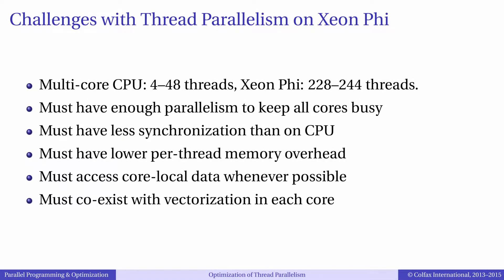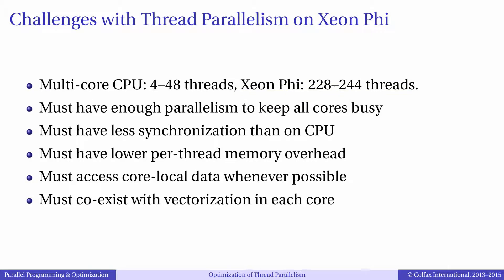Why is thread parallelism difficult, especially with Intel Xeon Phi processors? First, you have to have enough parallelism to keep all cores busy. On Intel Xeon processors your application must use tens of threads, and on Xeon Phi it must be hundreds of threads to take advantage of core parallelism. With this many threads it is important to keep thread synchronization to a minimum, because serializing even a tiny fraction of a parallel application can reduce its efficiency dramatically according to Amdahl's law.